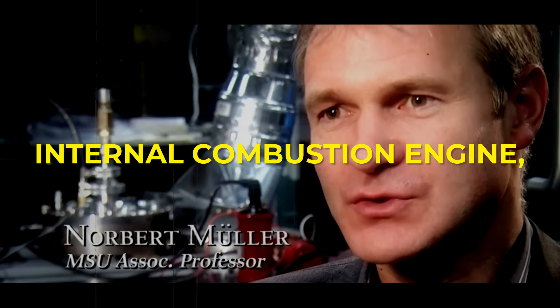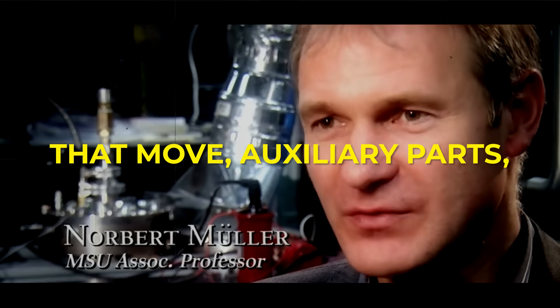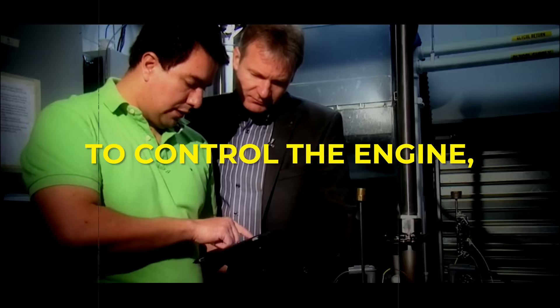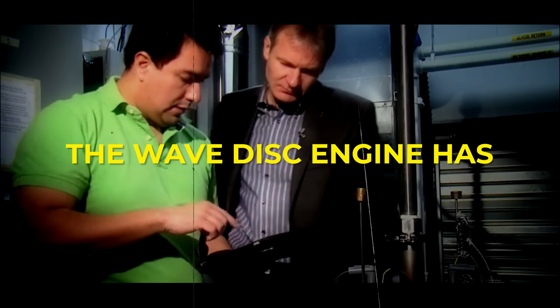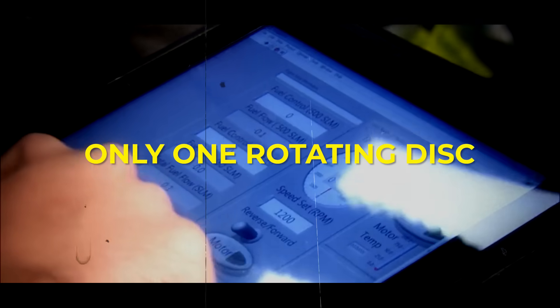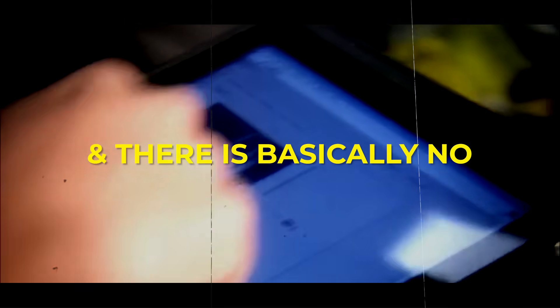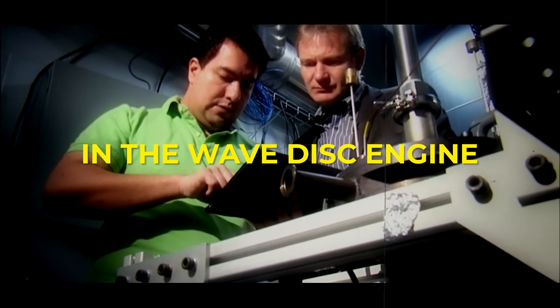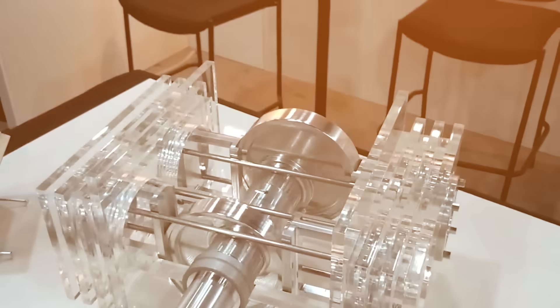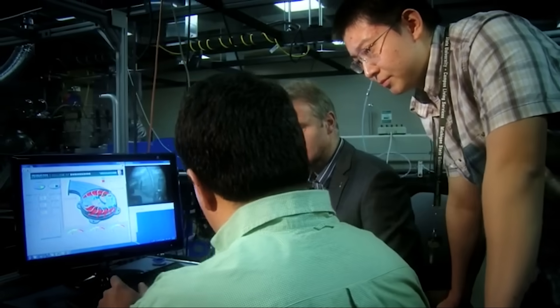Internal combustion engines have so many moving parts and auxiliary parts to control the engine, like the valve train and things like this. The wave disc engine has only one rotating disc with basically no friction between solid parts, hence less friction and losses. Some engines look strange, but this one might be the strangest we have ever talked about on this channel.